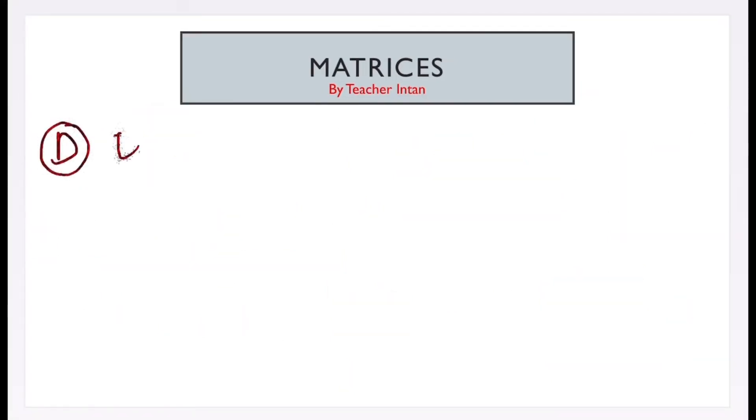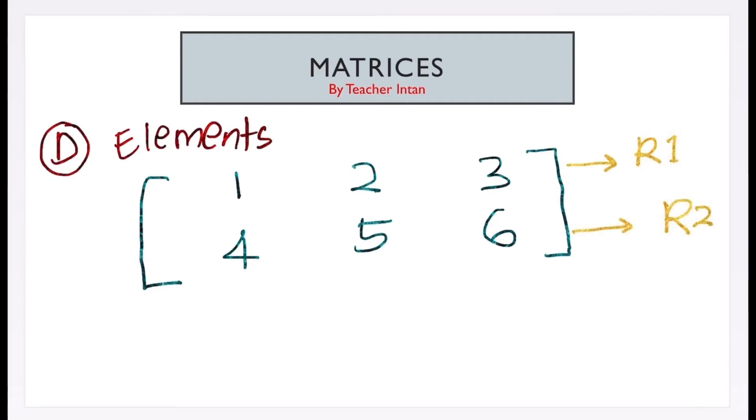Next, we have a look at the elements of a matrix. So, elements is actually the place, the place of the numbers in the matrix. First, we need to determine the rows and the column of that matrix. And then, as you can see, number 1 there is at row 1, column 1. So, the element for it is a11. Next, number 2. Number 2 is at row 1 and column 2. So, the element for it is a12. Number 3 there is at the first row, row 1 and column 3. So, the element for that is a13.